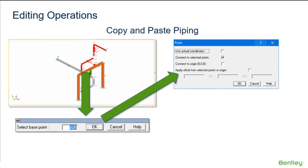If a range of points has been selected and the connect to selected points is specified, the clipboard contents will be repeatedly pasted and connected at each of the points in the selected range. If a range has been selected and an offset is specified, the clipboard contents will be repeatedly pasted at the specified offset from each point in the selected range.